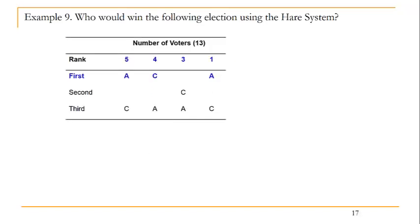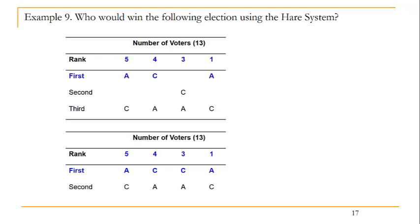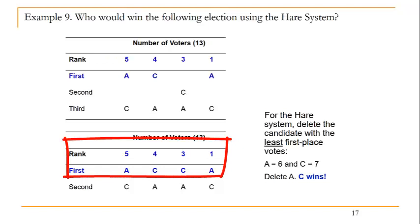When we delete candidate B from the mix and only have two candidates, we can clean that list up. We took our preference list and squished it into just first and second choices with only candidates A and C remaining. Now again we look at first place votes only: candidate A receives six first place votes and candidate C receives seven. Since candidate A has the least number of first place votes, candidate A is deleted.